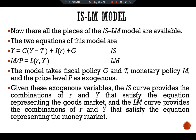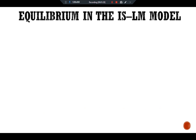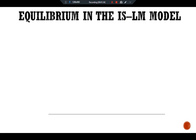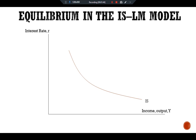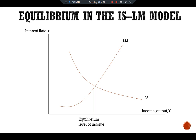Let's see a graphical presentation of equilibrium in the IS-LM model. We have income/output Y on the X-axis and interest rate on the Y-axis. We have a downward-sloping IS curve and an upward-sloping LM curve. Their intersection decides the equilibrium level of income and the equilibrium level of interest rate.